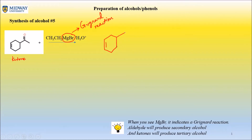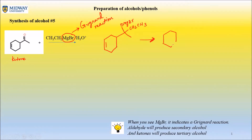Basically, the O gets attached to the MgBr, and then whatever's left over — the CH₂CH₃ — gets attached, and the CH₃ that's already there stays there. Then H₃O⁺ acts, and all you're left with is OH and CH₂CH₃.